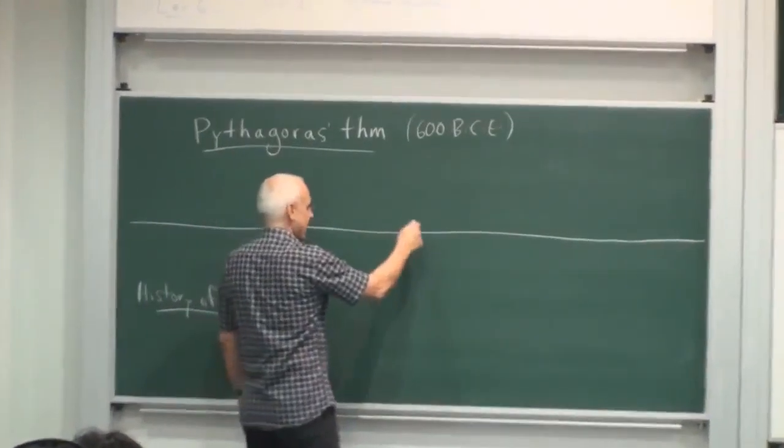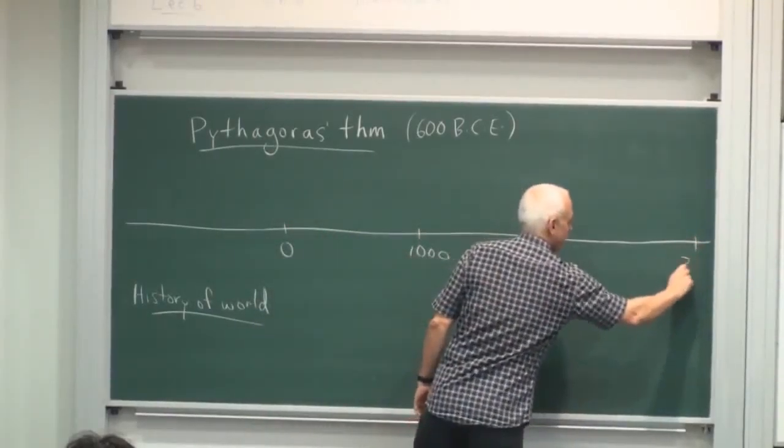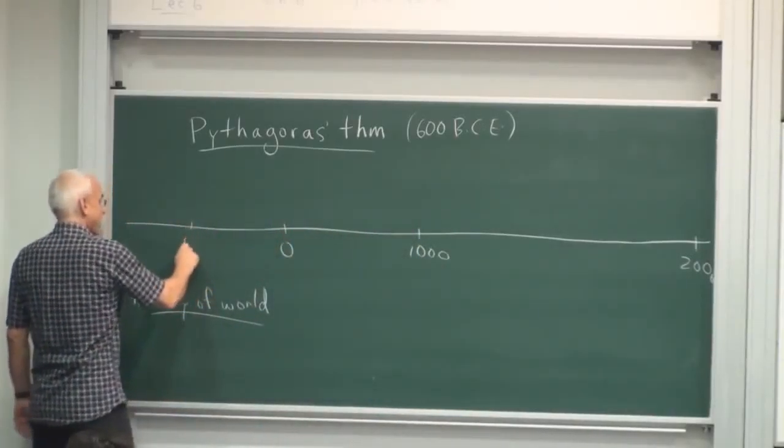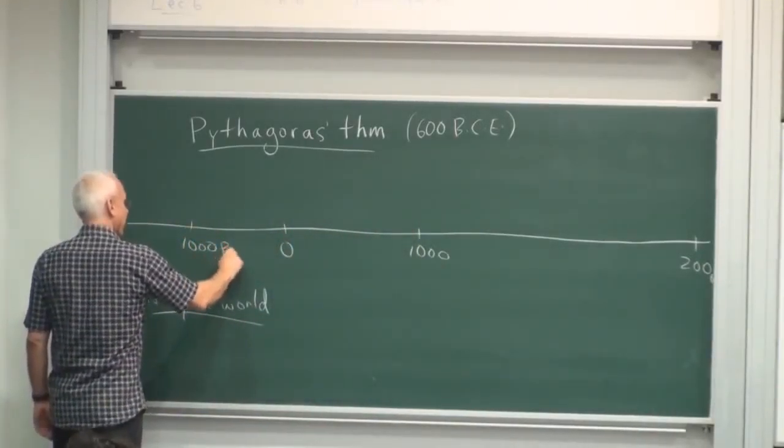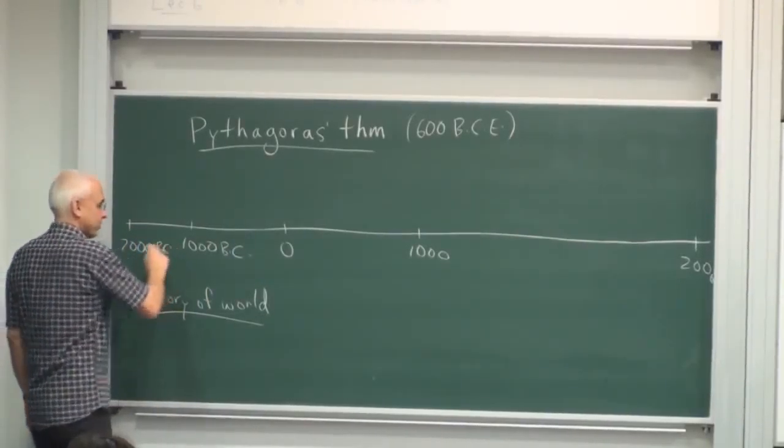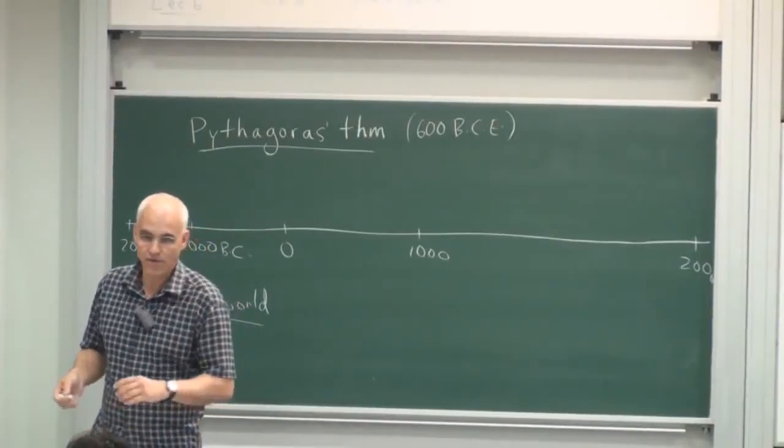And maybe not exactly a linear scale. Year 1000 there. Year 2000 here. And maybe here we had 1000 BC and 2000 BC. So what happened in the world for the last 5,000 years?